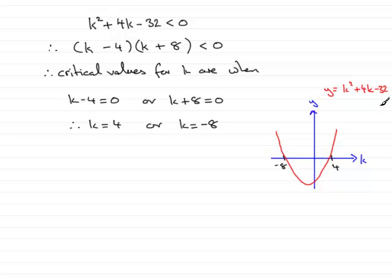And so, therefore, where do we find values of k which make this expression here less than 0, negative in other words? They are values that are below the k axis. They're the values between minus 8 and 4. So we want all of these values along here.